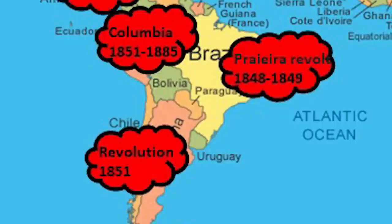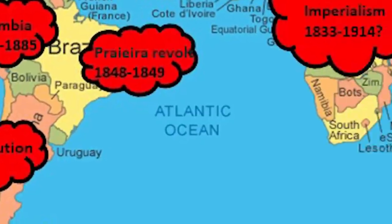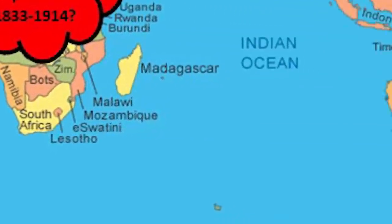Going to South America: there was conflict in Chile with the Revolution of 1851, the Prairie Era Revolt in Brazil from 1848 to 1849, and constant conflict in Colombia from 1851 to 1885. We've already looked at two entire continents — North and South America — and we see they are rife with conflict during this particular time. What about Australia and New Zealand? In New Zealand we had the Maori Wars, and in Australia we had the Aboriginal Wars, which were somewhat similar in their ongoing nature to the Native American conflicts in North America.